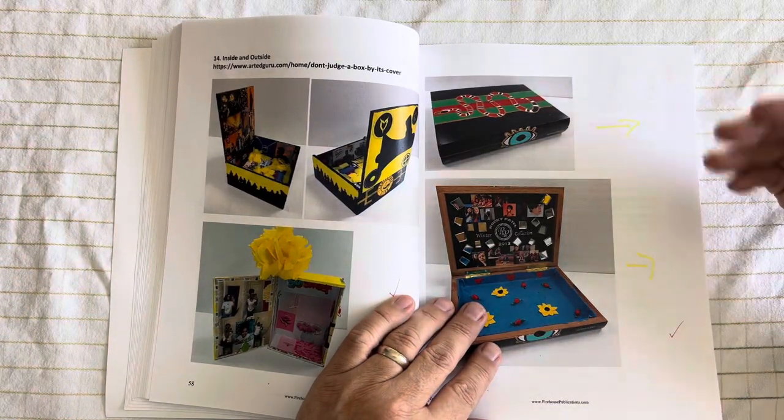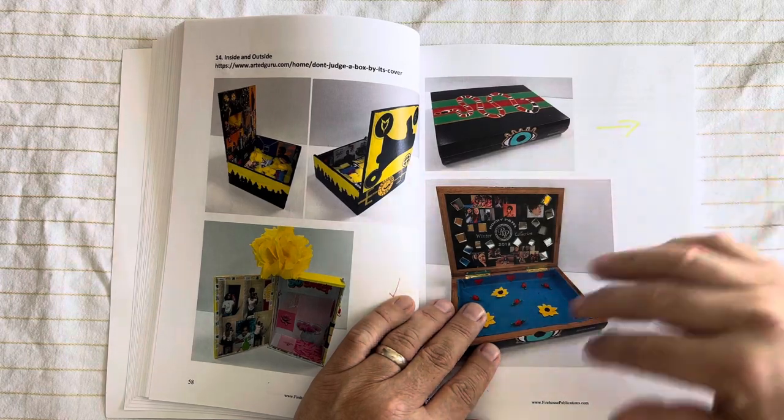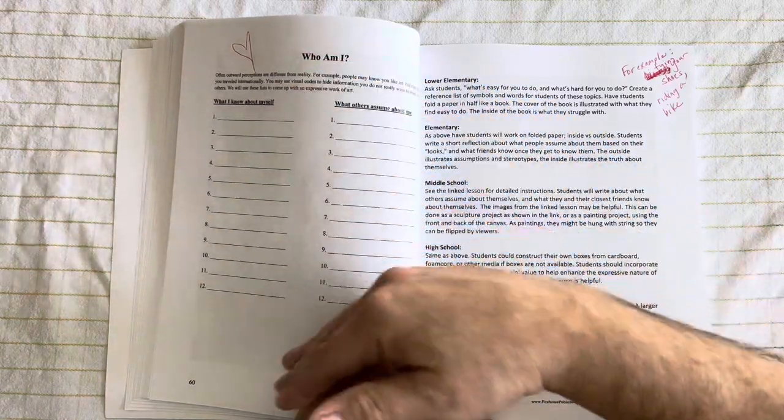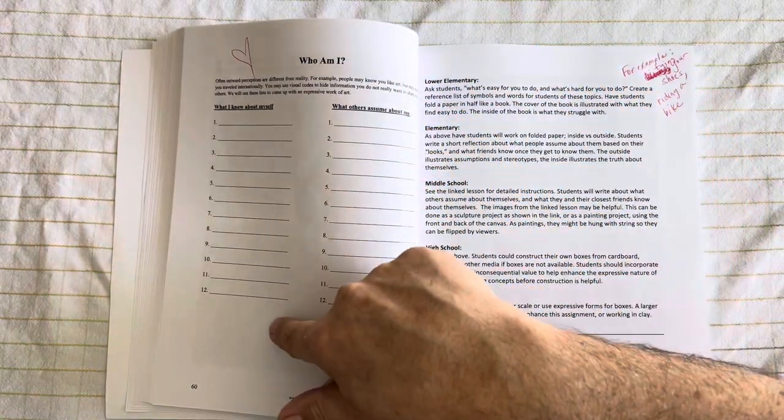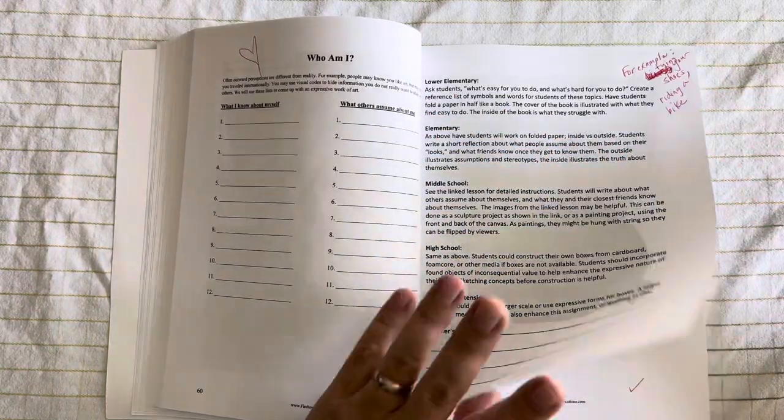This is called Inside Outside, where we have a sculpture and a box. The inside of the box tells us who you really are. The outside of the box is how people perceive you to be. And there's even some worksheets that you can use with your students where they can reflect on what they know about themselves and what they assume other people assume about them.